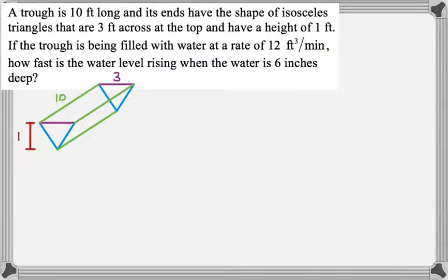Okay, so the 10 feet is going to apply no matter what's going on, but the 1 and the 3 are only if the trough is completely full. Otherwise, we're filling this with water, and because we're filling it with water and you see an isosceles triangle, it means we probably want to cut that in half and get just a right triangle.